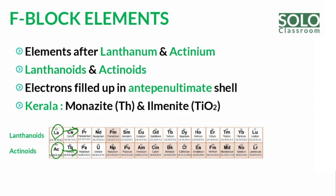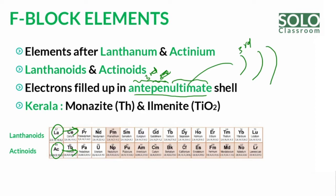In F-Block Elements, electron filling happens in the antipenultimate shell — that is, the third last shell. The outermost shell is last, penultimate is second last, and antipenultimate is third last. In the case of F-Block Elements, electron filling occurs in this antipenultimate shell, the third last shell.